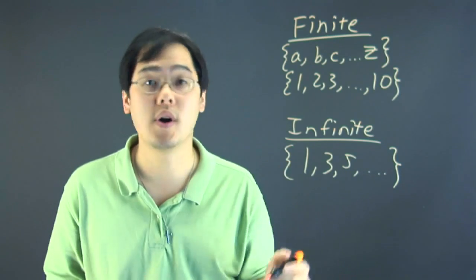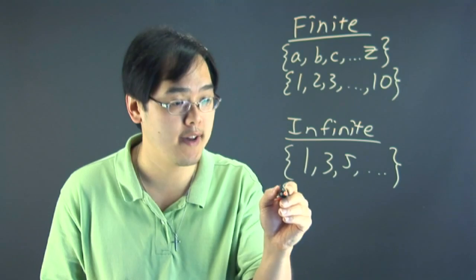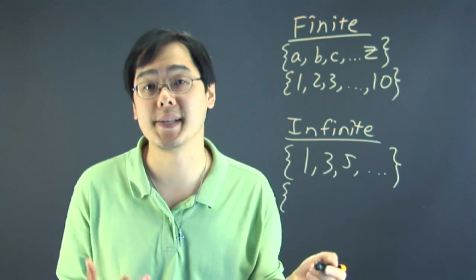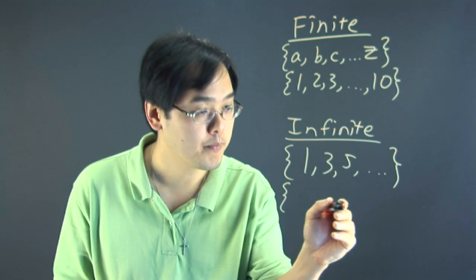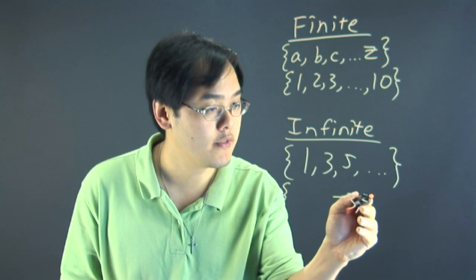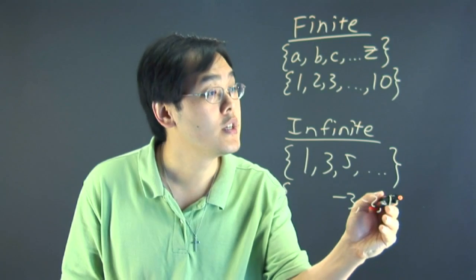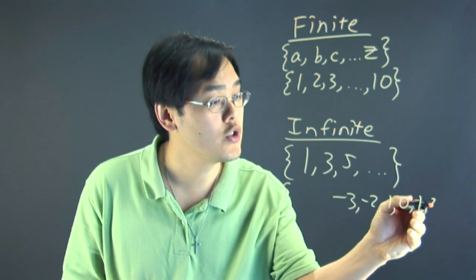Now, obviously, this is just one type of infinite sequence. You could have perhaps all the positive and negative whole numbers known as the integers. You could have negative 3, negative 2, negative 1, 0, 1, 2, etc.